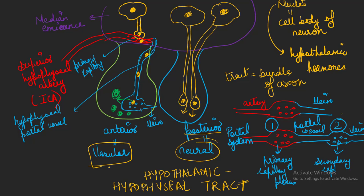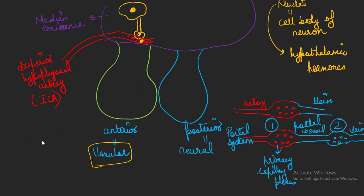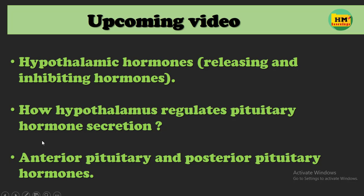These are the questions which are asked in the VIVA. In the upcoming video, we will talk about the hypothalamic hormones and how these hypothalamic hormones regulate pituitary hormone secretion, as well as what the hormones of the anterior pituitary and posterior pituitary are. If you want to get notifications and not miss these videos, please subscribe to the channel and press the bell icon. Please follow HM Learnings on Twitter, Facebook, and Instagram for regular updates to rock your VIVA and boost your knowledge. Please like, share, and follow us on the official pages of HM Learnings. Till then, keep learning.